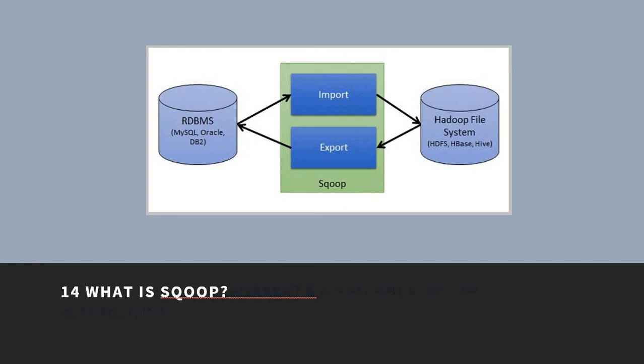What is Sqoop? Sqoop is a command-line interface application for transferring data between relational databases and Hadoop. It is a simple tool designed to transfer data between Hadoop and relational database servers. It is used to import data from relational databases such as MySQL and Oracle into Hadoop HDFS, and to export data from the Hadoop file system to relational databases.